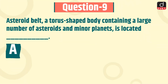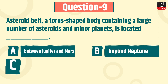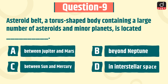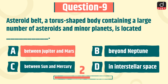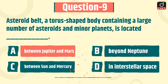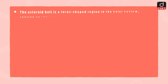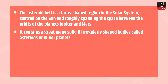The next question is: the asteroid belt, a torus-shaped body containing a large number of asteroids and minor planets, is located where? Between Jupiter and Mars, beyond Neptune, between the Sun and Mercury, or in interstellar space? The correct answer is option A, between Jupiter and Mars. The asteroid belt is a torus-shaped region in the solar system, centered on the Sun and roughly spanning the space between the orbits of the planets Jupiter and Mars. It contains a great many solid and irregularly shaped bodies called asteroids or minor planets.